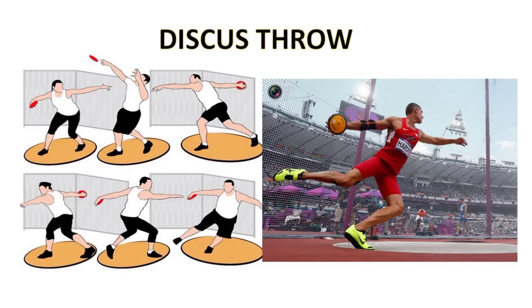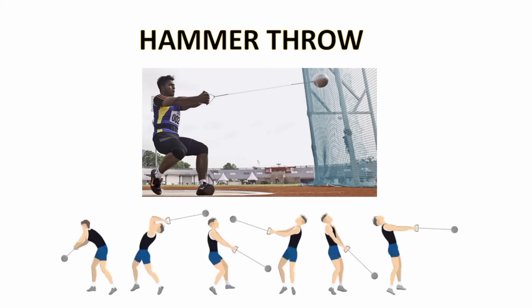The discus throw is performed from a ring or circle 8 feet 2.5 inches in diameter. Athletes throw a 2 kg plate-like implement. The discus is launched after the thrower, starting at the back of the circle, has completed one and a half turns. The facility for the discus throw includes a throwing circle, a protective cage, and a landing sector.